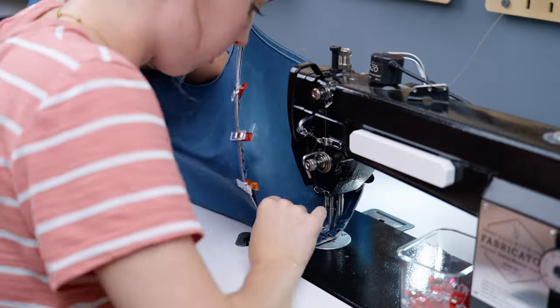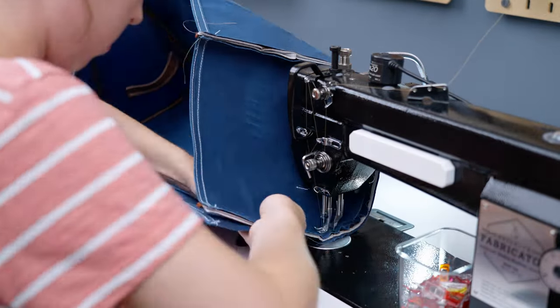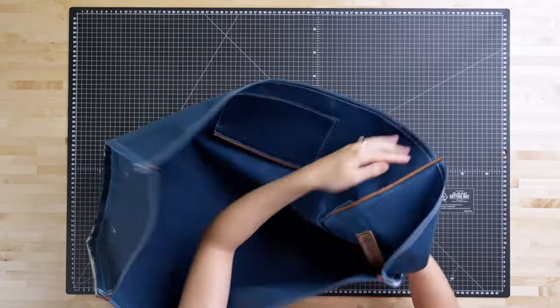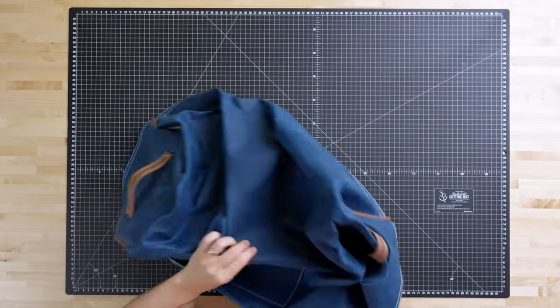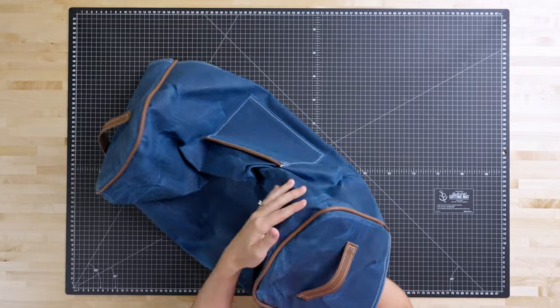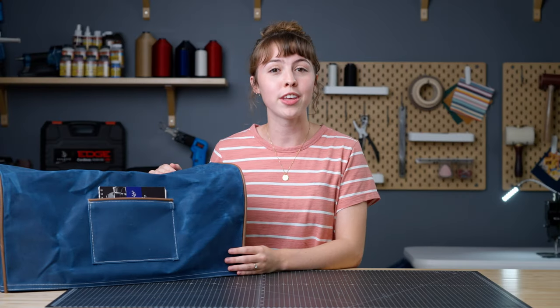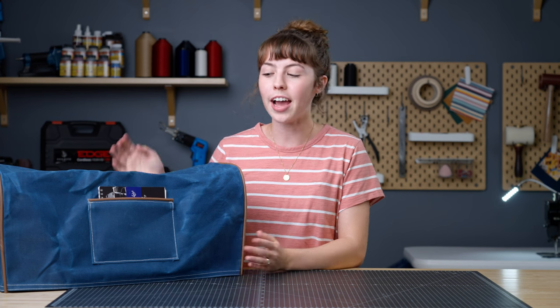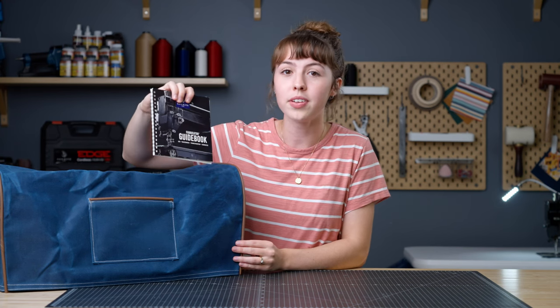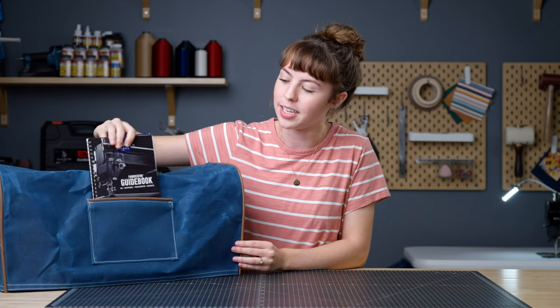Once everything is sewn together, go through and seal all the thread ends with the thread burner for a professional look. The last step of our project is to flip the project right side out. And now you have a sewing machine cover that you can be proud of. And a fun fact about the front pocket is that it perfectly fits our Fabricator guidebook so that you can keep it in there.